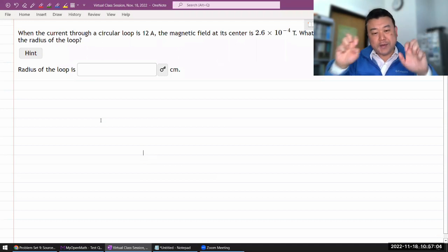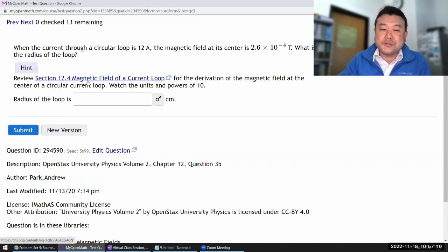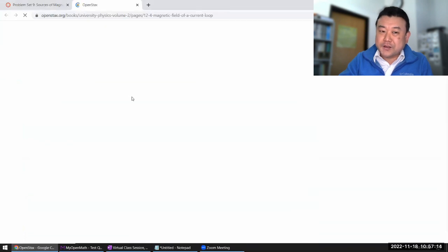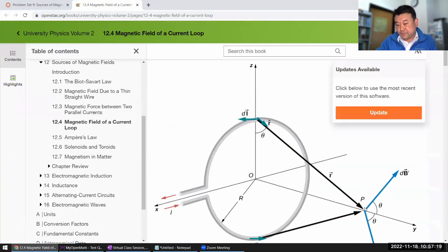Now, there is an easy way to do a question like this. Hint even links you to the section. And in the section, it does derive the formula for magnetic field due to a current loop.